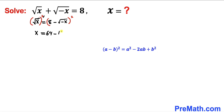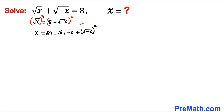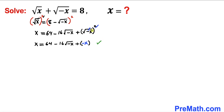So the right hand side becomes 64 minus 16 times square root of negative x, plus the square root of negative x whole squared. Now let's focus on this last part: this square and square root undo each other, so we simply end up with negative x. As you can see, I have replaced that part with just negative x.